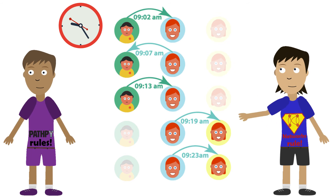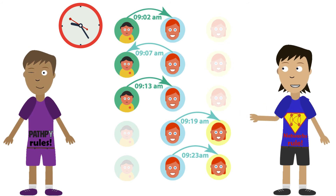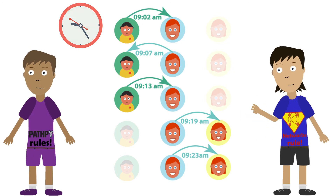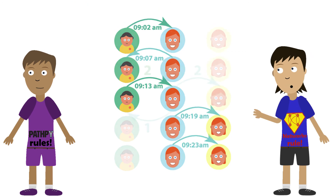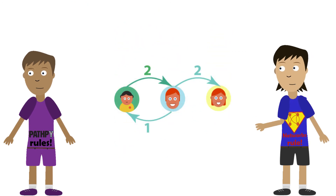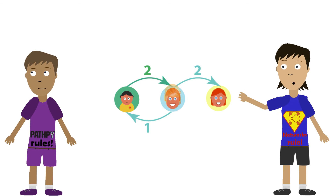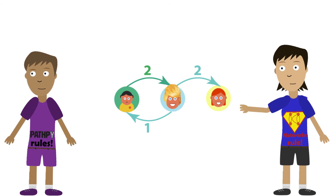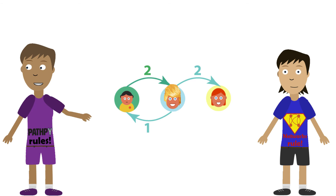No problem. I can still use network methods. I simply count user interactions to get a time-aggregated weighted social network. Now I can use social network analysis to see who's the most important user.